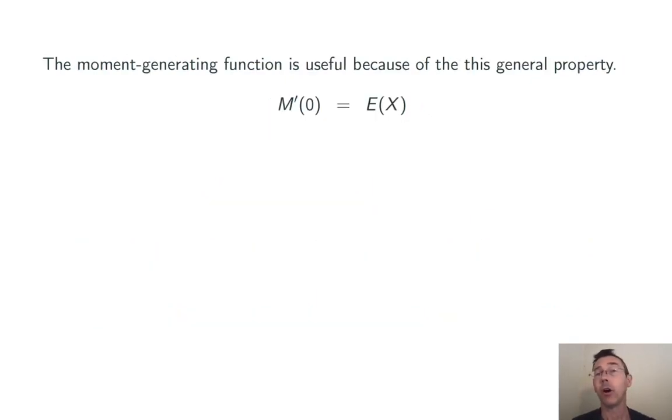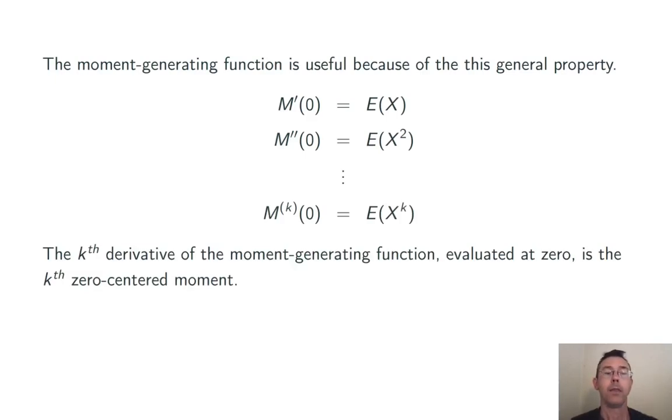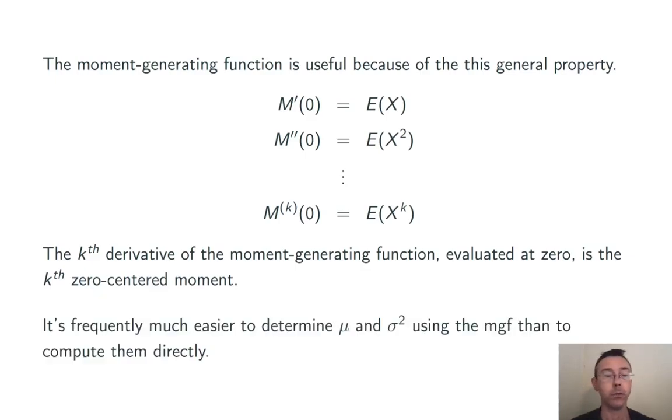In fact this is always the case as long as that moment generating function is differentiable in the neighborhood of t equals zero. M'(0) is always the expected value. M''(0) then is the expected value of x squared and so on. The kth derivative of the moment generating function evaluated at zero is always the kth zero centered moment of that distribution.